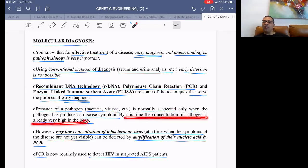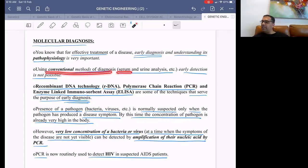So pathogen's level becomes high. And conventional methods of diagnosis - blood or serum testing, urine analysis - there is no early detection possible. Blood test, urine test do not give you early detection.